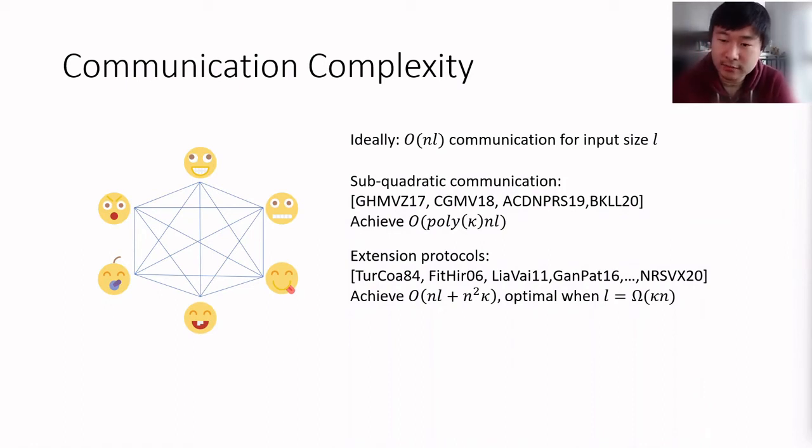And their protocol achieves a communication of n times l plus n squared times kappa. This basically means that if the input size is long enough, in particular if the input size is at least of size kappa times n, linear in the number of parties, then the protocol achieves optimal communication, n times l.